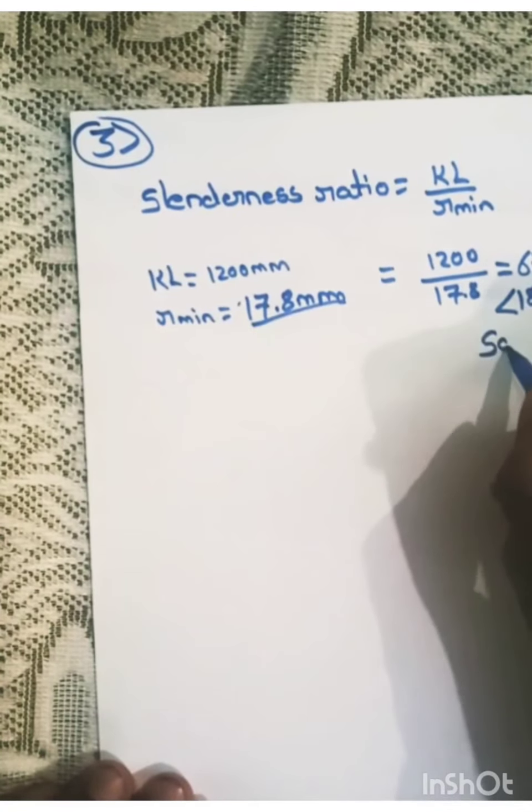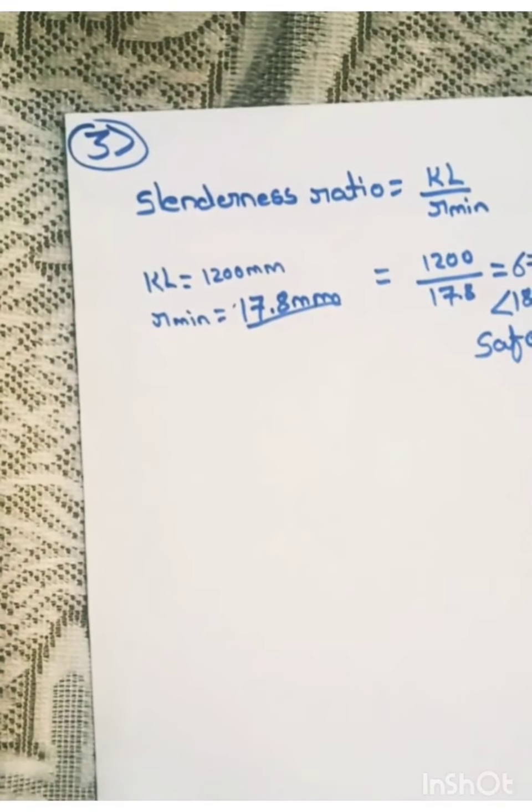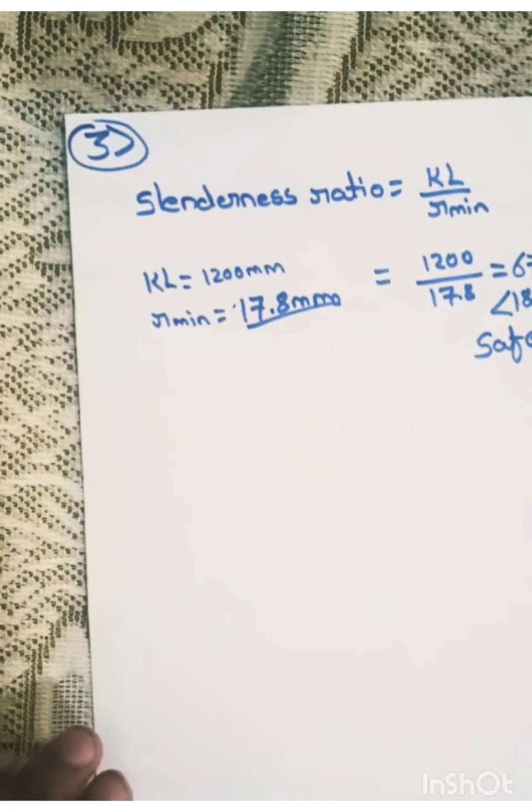which is less than 180 for buckling criteria. So it is safe. So this is safe. The angle which we have selected can be used. Now, let us check its compression capacity.